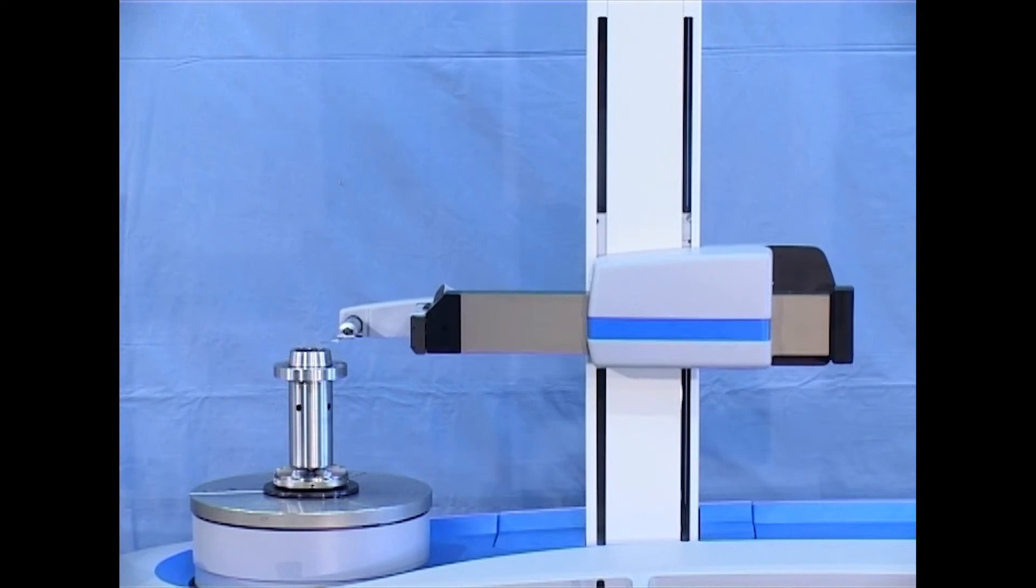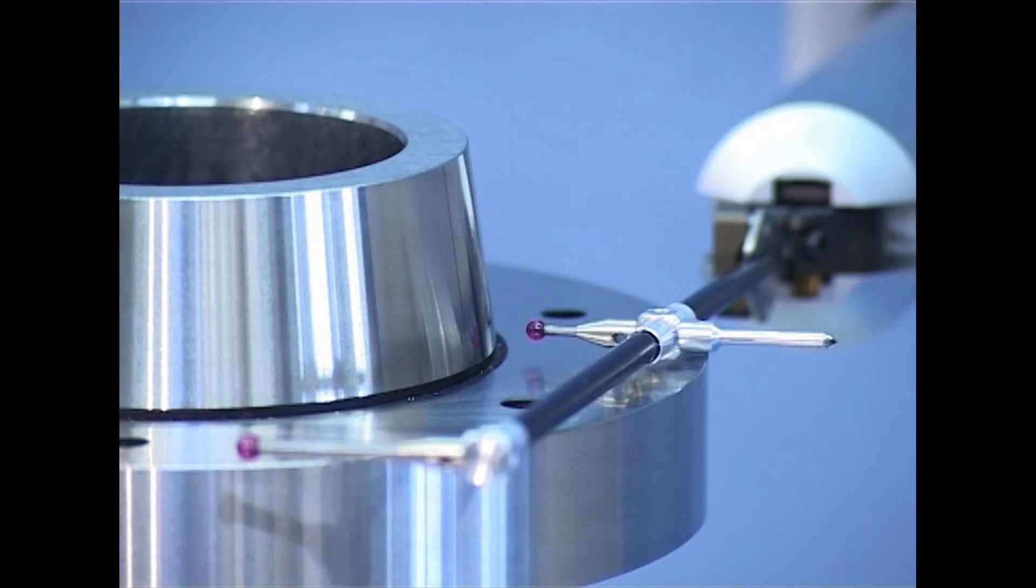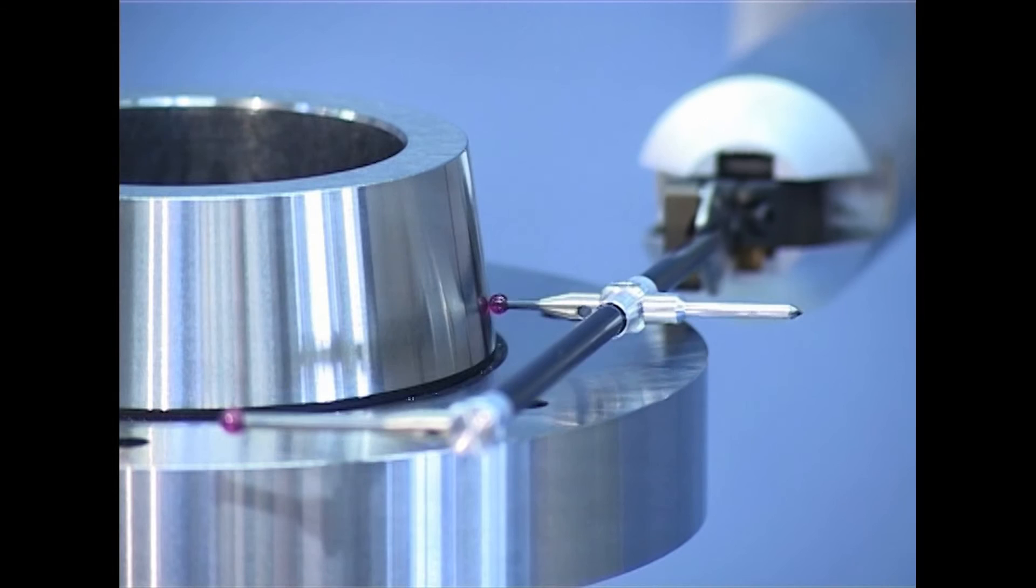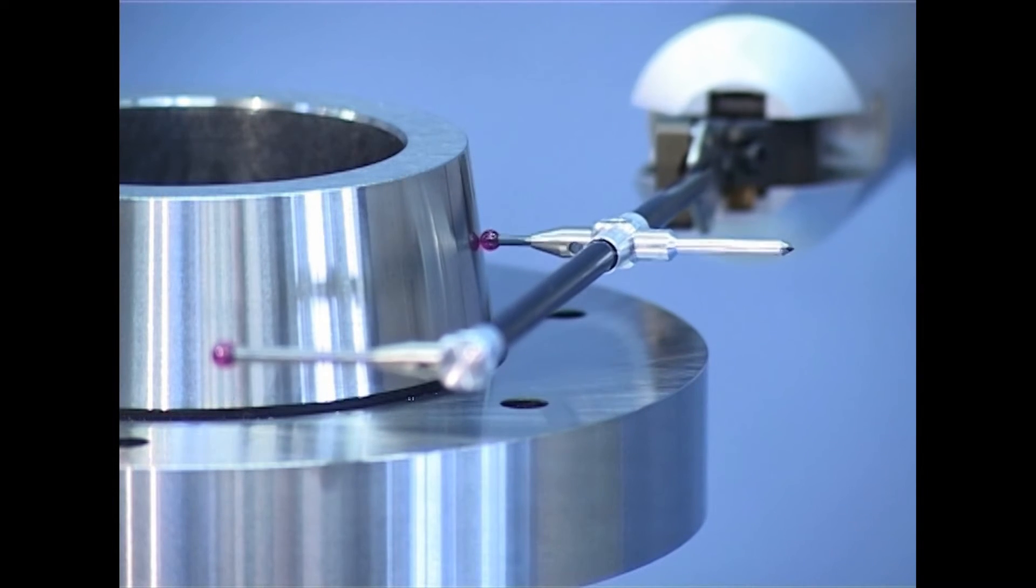Optional linear scales in the axis allow a measuring scanning operation. This allows very precise evaluation of heavily tilted conical forms.